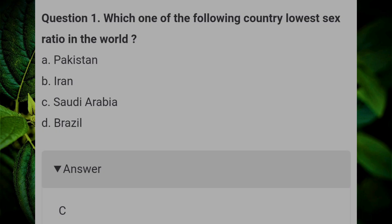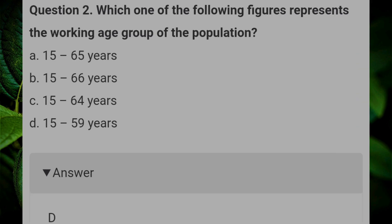Which one of the following countries has the lowest sex ratio in the world? Answer: C, Saudi Arabia. Which one of the following figures represents the working age group of the population? Answer: D, 15 to 59 years.